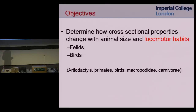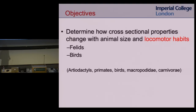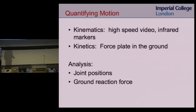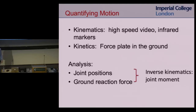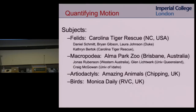The objectives were to determine how cross-sectional properties change with animal size and locomotor habits. I've shown how they change with size across wide ranges. Now looking at locomotor habits — work with collaborators at the vet college — we're measuring kinematics using high-speed video and infrared markers, very similar to how we do it for children with cerebral palsy, but now working in zoos and wild animal parks. Subjects scanned include cats in North Carolina, kangaroos in Australia, artiodactyls in the UK, and birds.